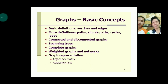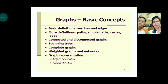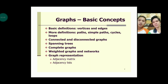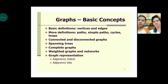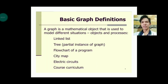Here are the table of contents we will tackle: first, basic definitions, vertices and edges, more definitions, paths, simple paths, cycles and loops, connected and disconnected graphs, spanning trees, complete graphs, weighted graphs and networks, and graph representation — which has two types: adjacency matrix and adjacency list.